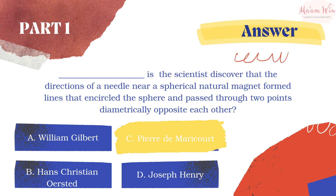He called them the poles of the magnet. Succeeding experiments showed that every magnet, regardless of its shape, has two poles called north and south poles that exert forces on each other — similar to the way that electric charges exert force on one another.